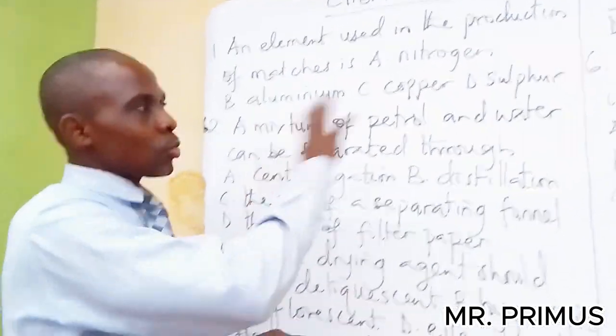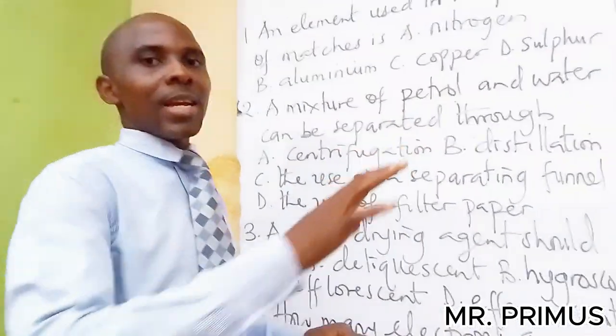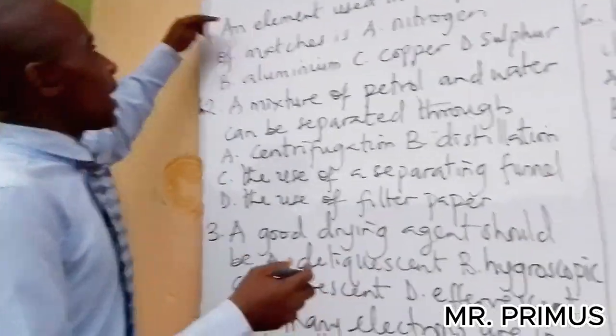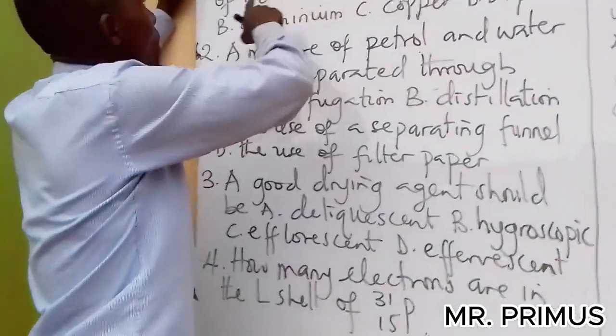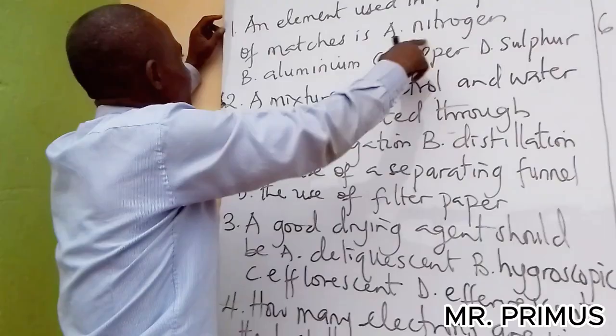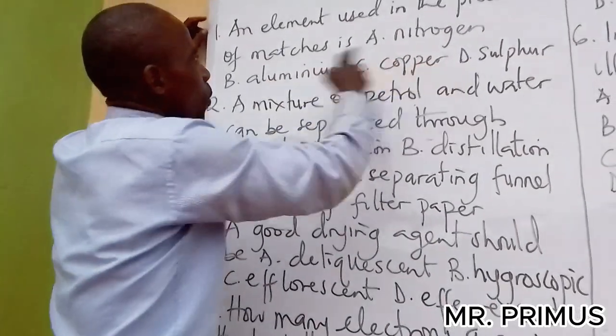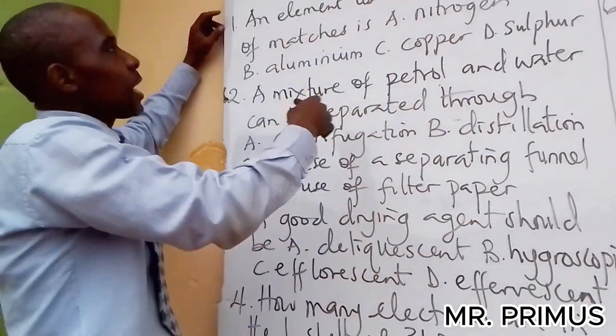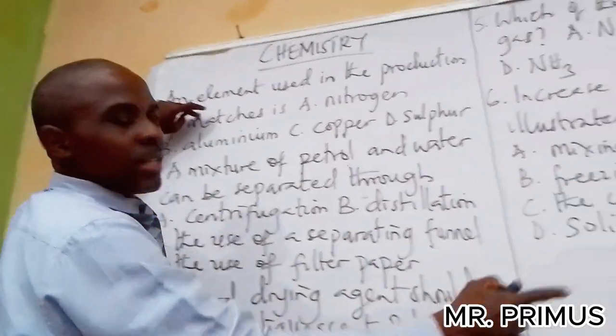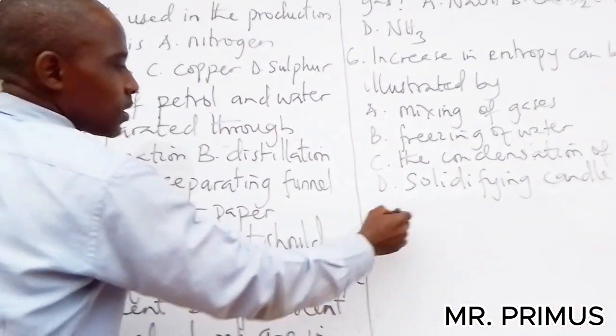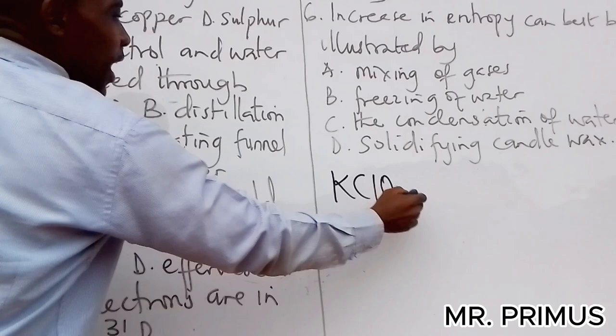Let's come to this chemistry very quickly. We are going to use this to answer a lot of other questions. An element used in the production of matches: nitrogen, aluminum, copper, or sulfur? Which of the following?